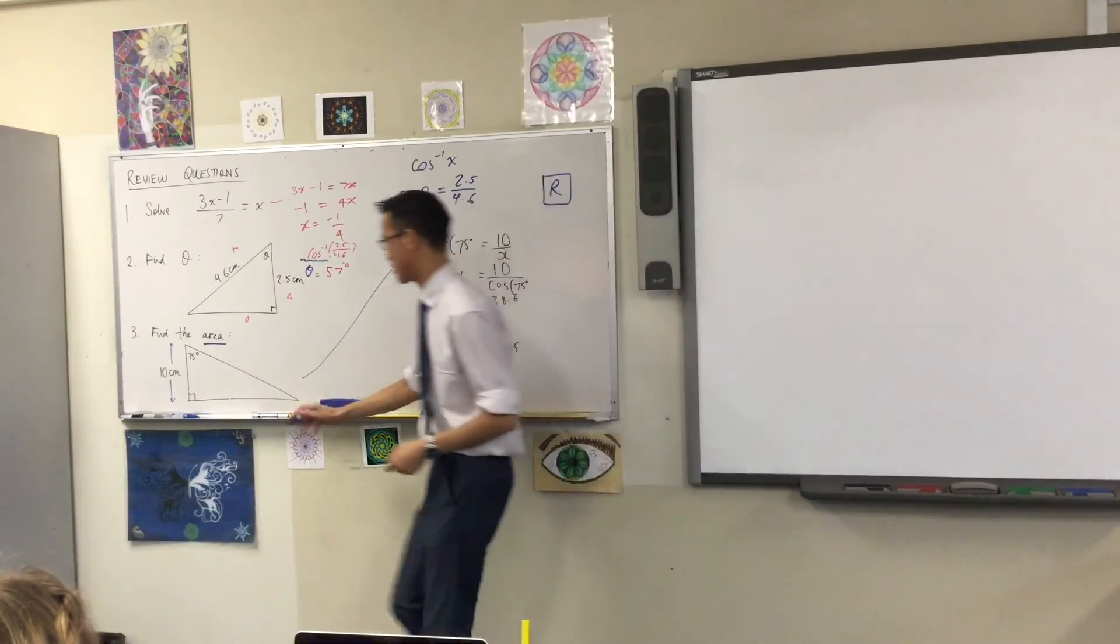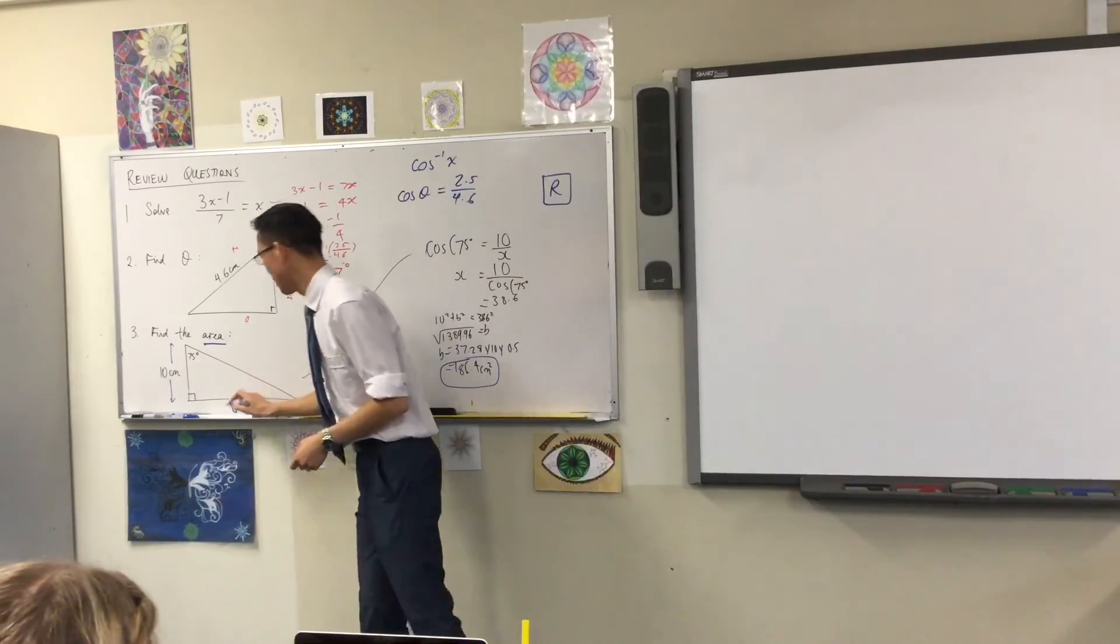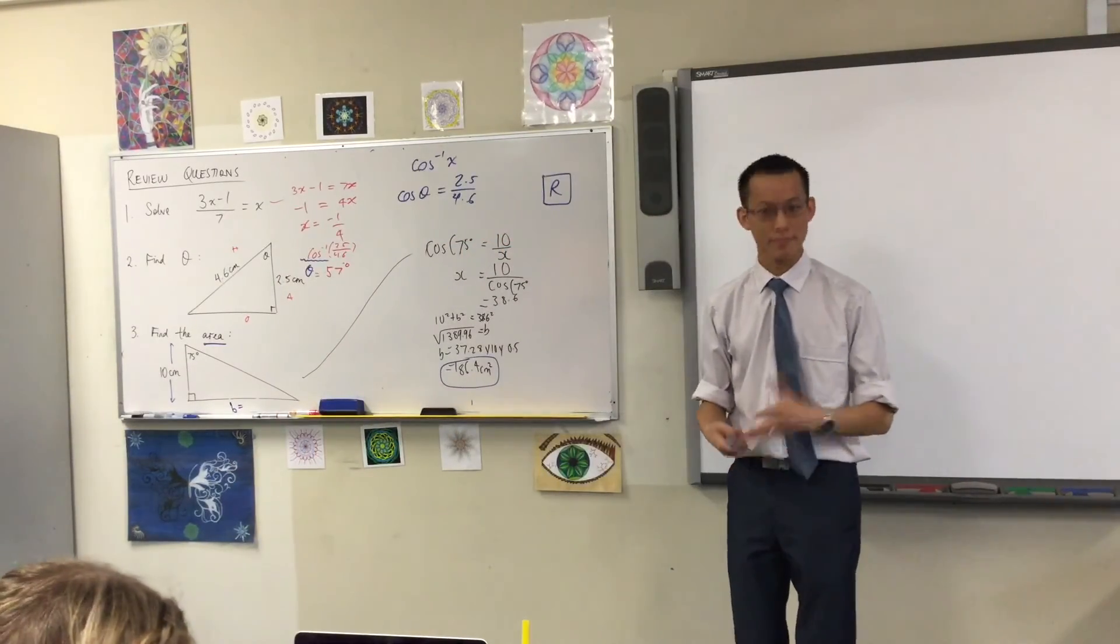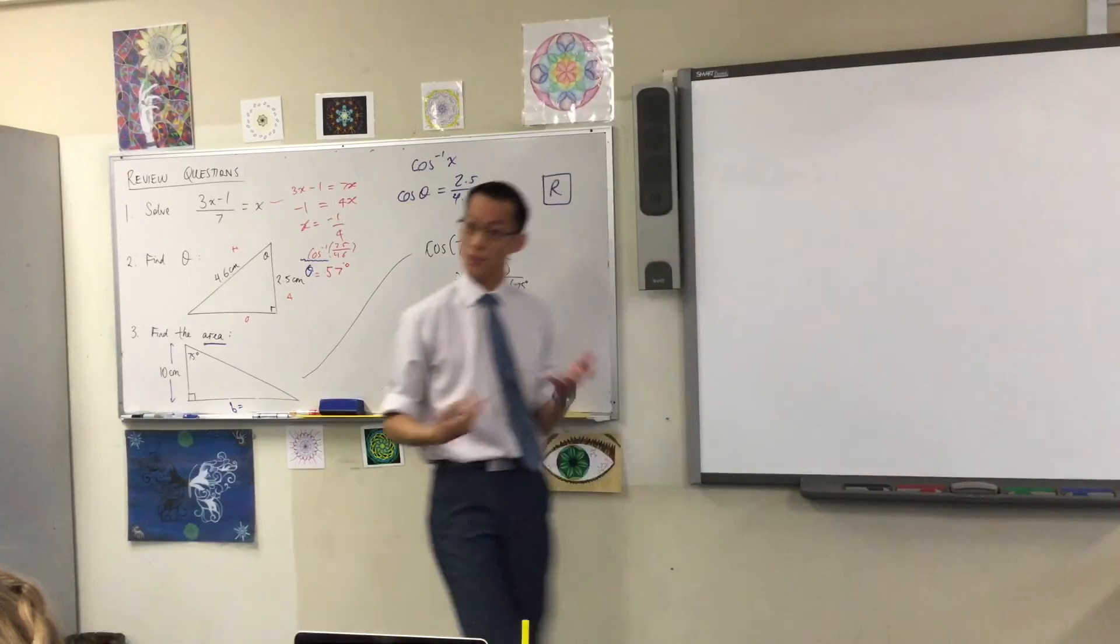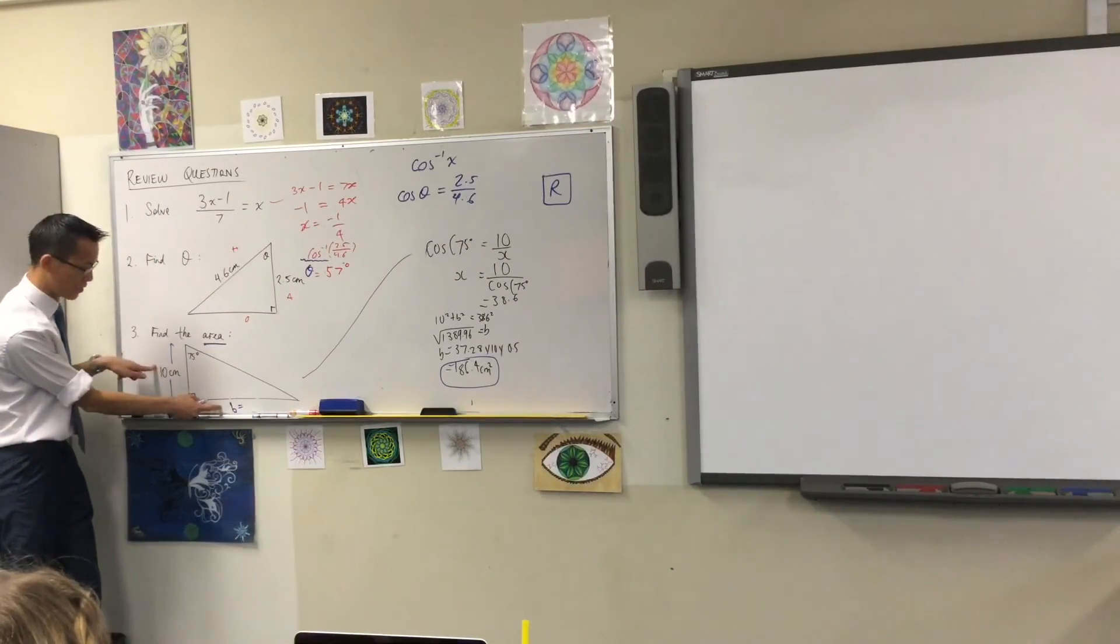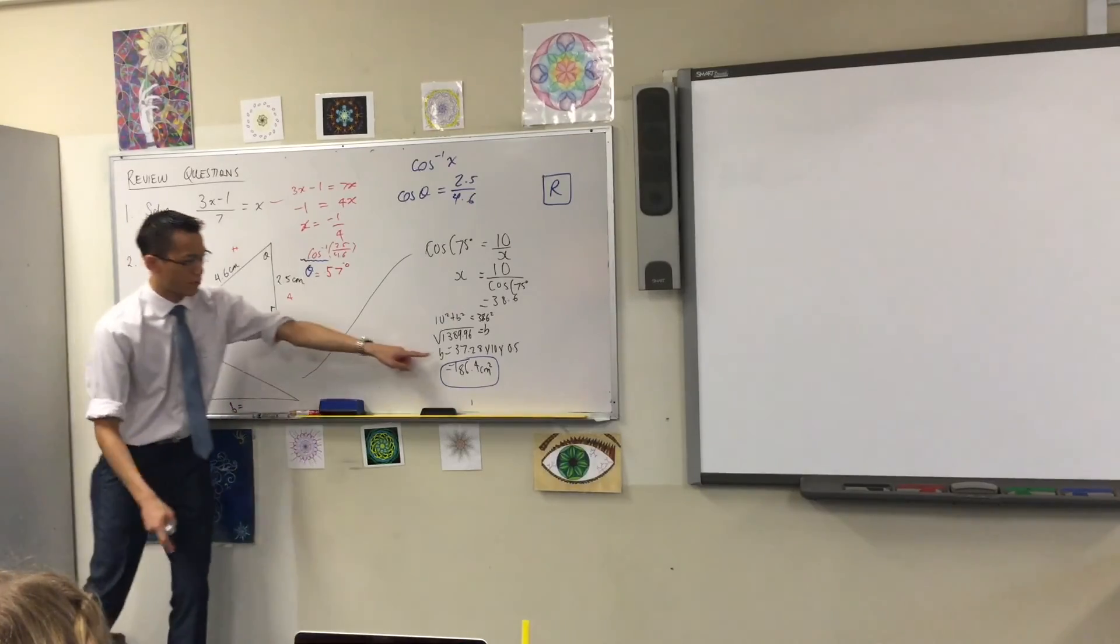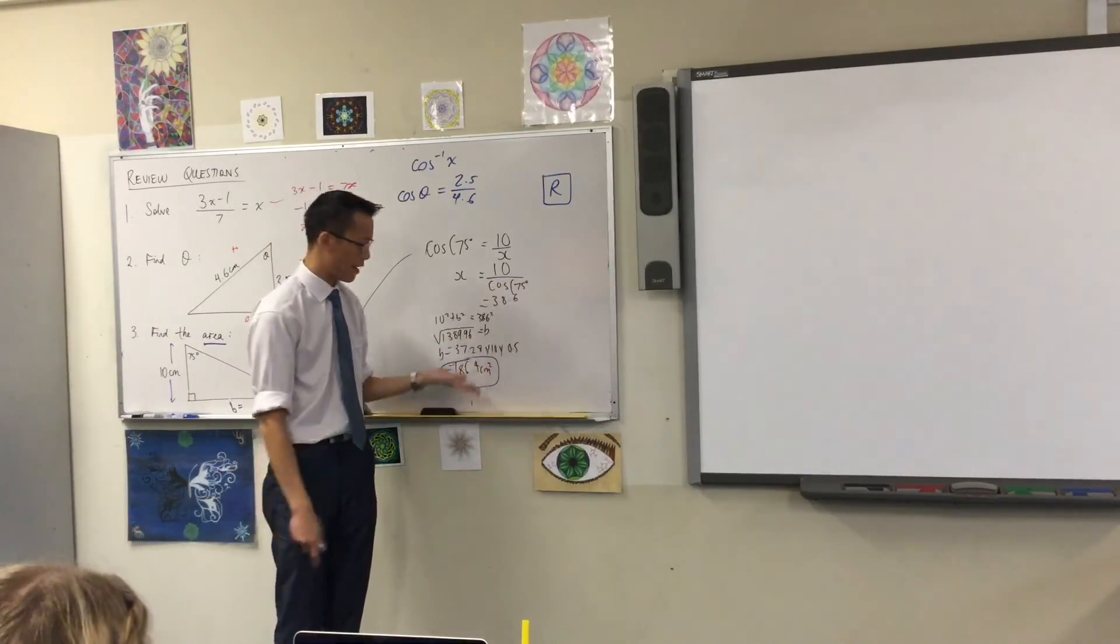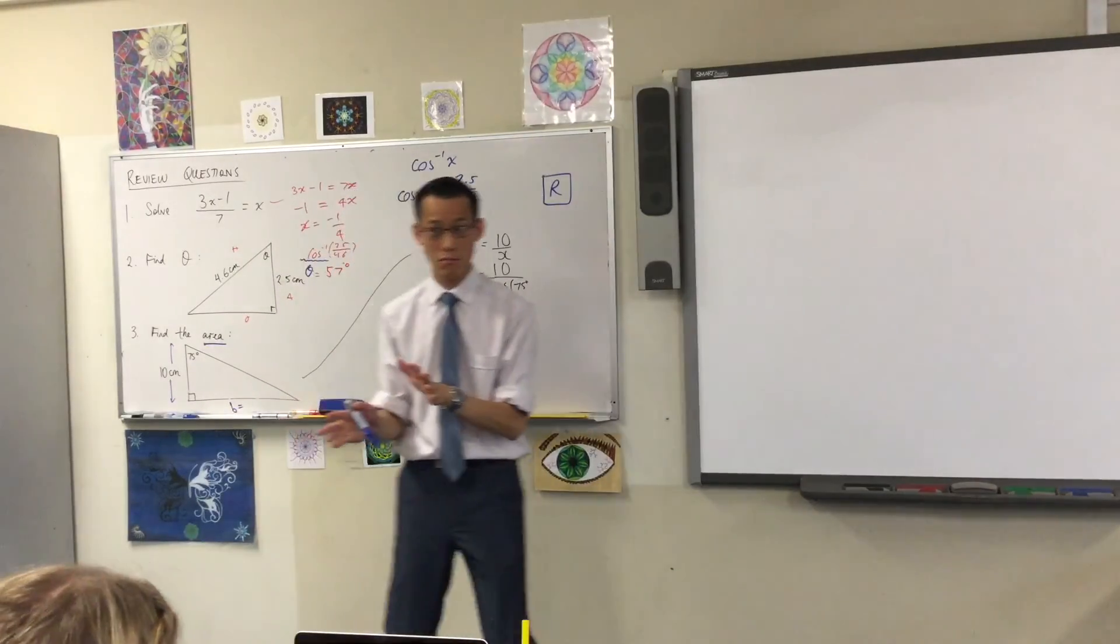If we want to go straight to this base down here, I'll call it B for base. What am I going to do? What am I going to do differently? 10, 75 degrees. Yeah, good. So I'm going to use a different ratio, because these two guys are opposite and adjacent. Once you've got this side, you can use this. You'll still get 37.28 whatever. Are you happy with that? Yeah.